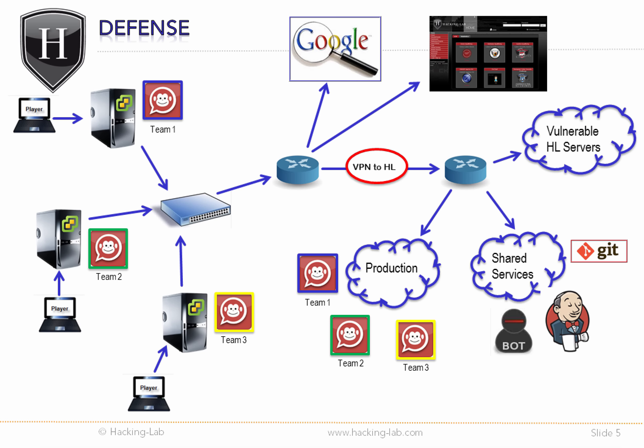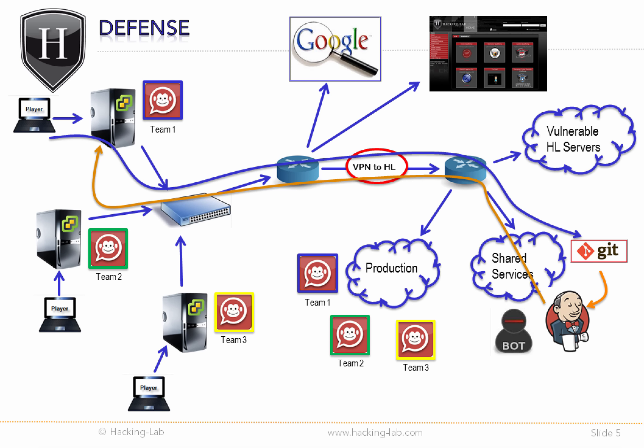When it comes to defense, teams have access to a Git repository. In total there are 21 different Git repositories, and each team has an exclusive, individual Git repository for their own application — private Git repositories, not accessible by other teams. If a team wants to change or fix vulnerabilities in the given web app or service, they need to push changes to their Git repository, where the Jenkins build server will take the changes, build the application, and deploy them back to the team's ESX server on premise or to the production server in the shared Hacking Lab infrastructure.